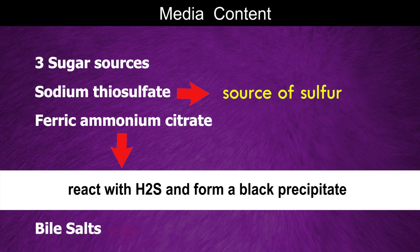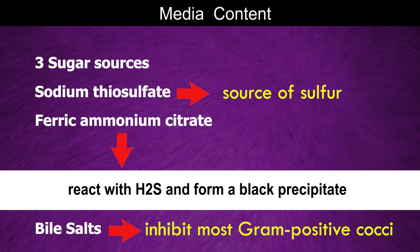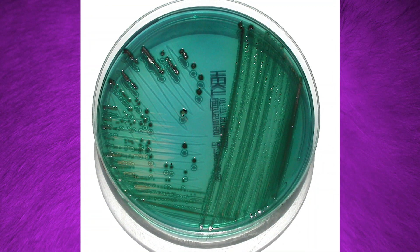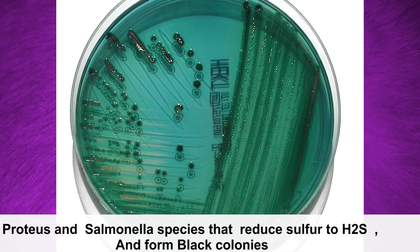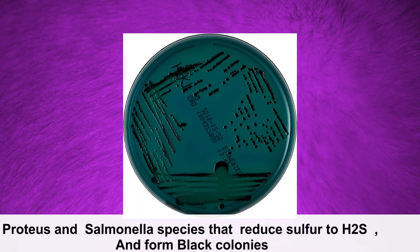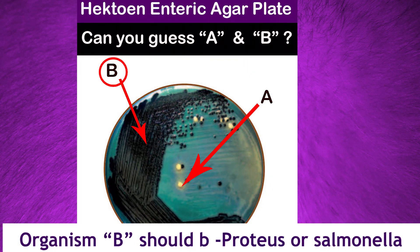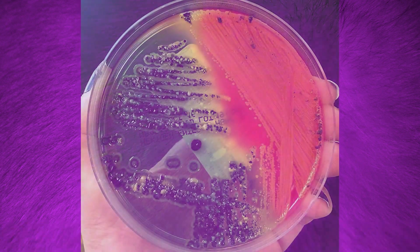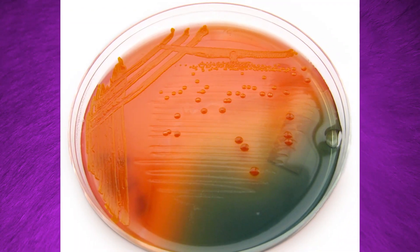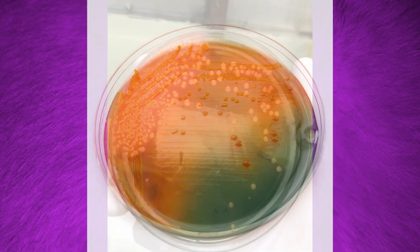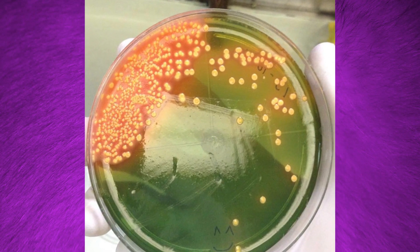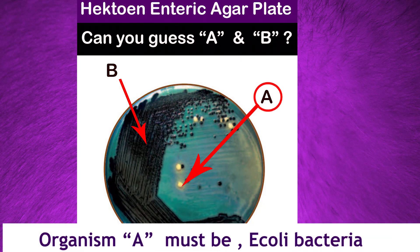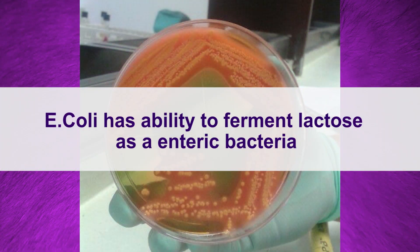Bile salts are included to inhibit most gram-positive cocci. Proteus and Salmonella species that reduce sulfur to hydrogen sulfide form colonies containing a black precipitate. Therefore, organism B should be Proteus or Salmonella. Also, lactose fermenters produce acid and it will produce yellow to salmon-pink color characteristic colonies on Hektoen Enteric Agar. Therefore, organism A must be Escherichia coli bacteria because it has the ability to ferment lactose as an enteric bacterium.